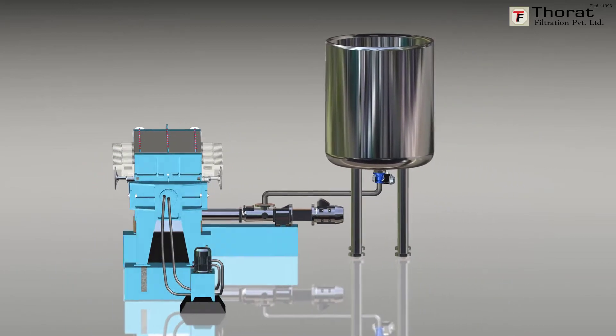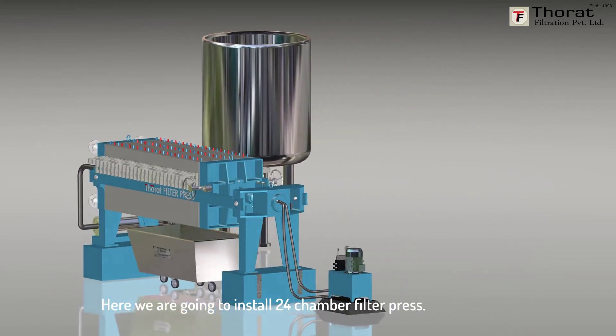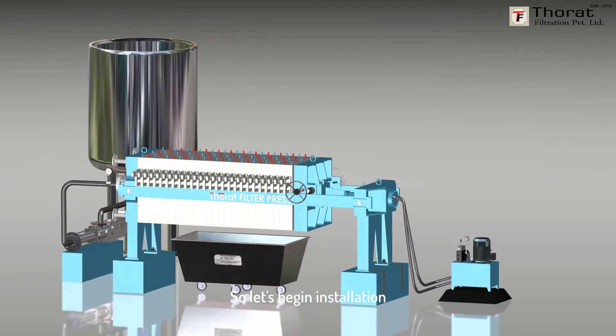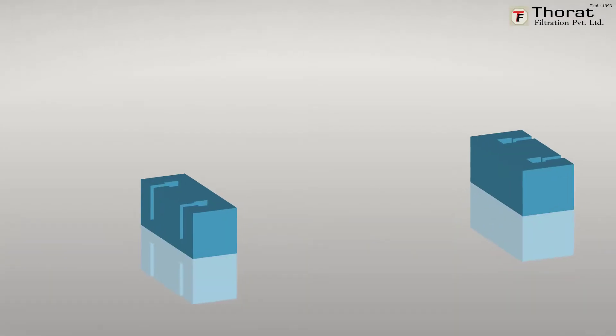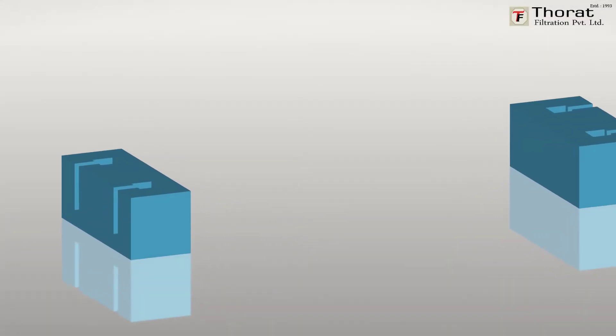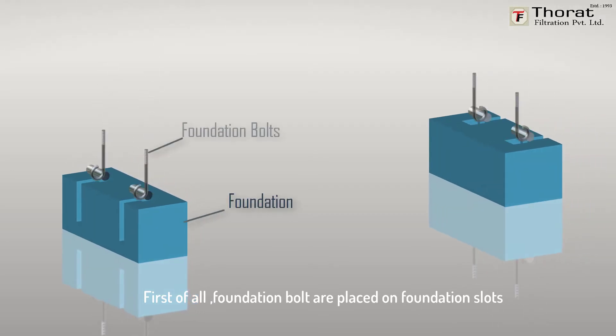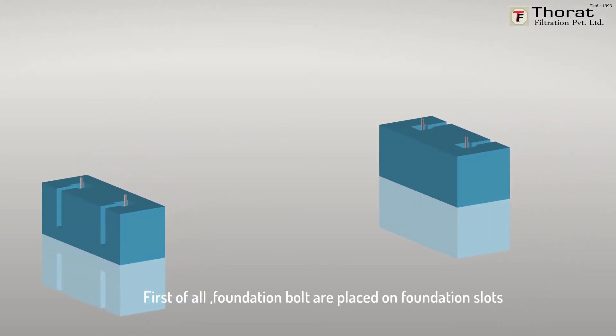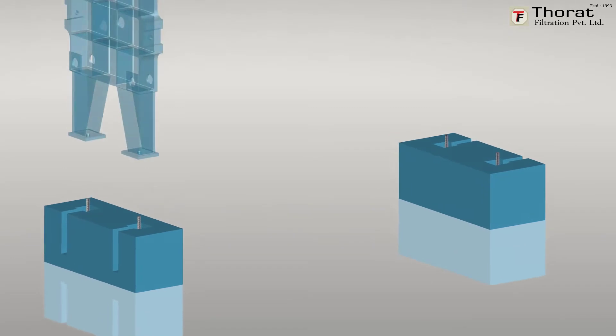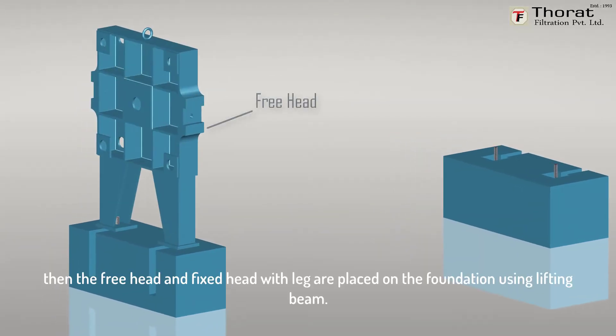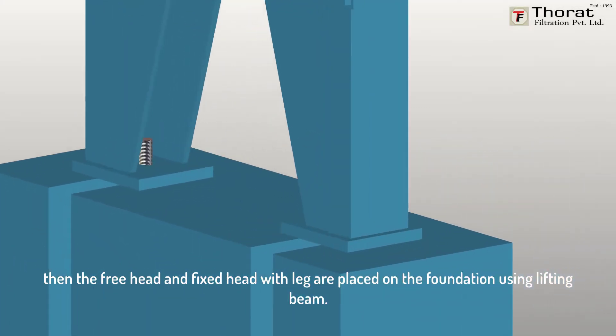Here we are going to install a 24 chamber filter press. Let's begin installation. First of all, foundation bolts are placed on foundation slots. Then the free head and fixed head with leg are placed on the foundation using lifting beam.